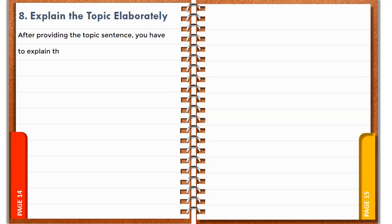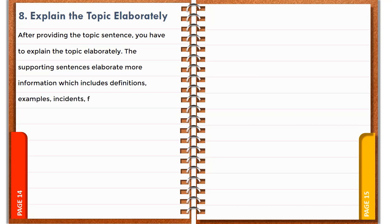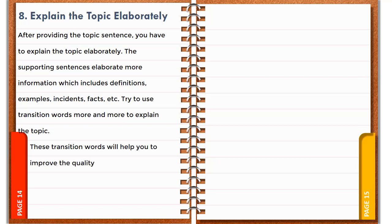Number 8: Explain the topic elaborately. After providing the topic sentence, you have to explain the topic elaborately. The supporting sentences elaborate more information which includes definitions, examples, incidents, facts, etc. Try to use transition words more and more to explain the topic. These transition words will help you to improve the quality of your paragraph writing.